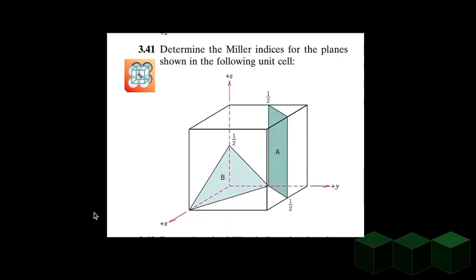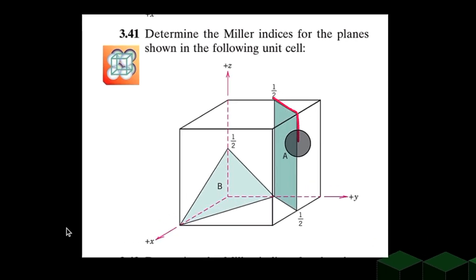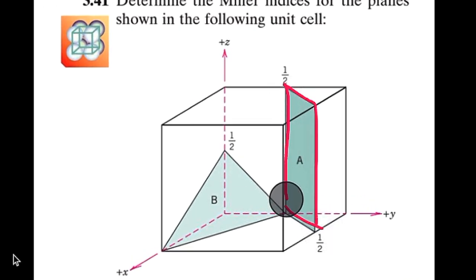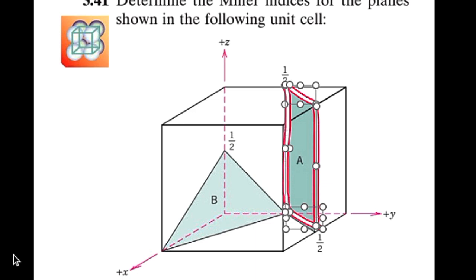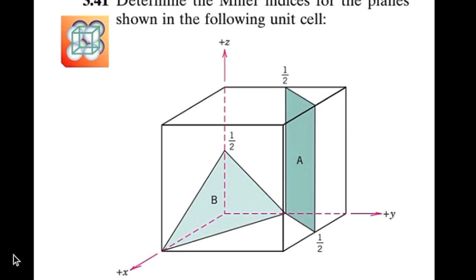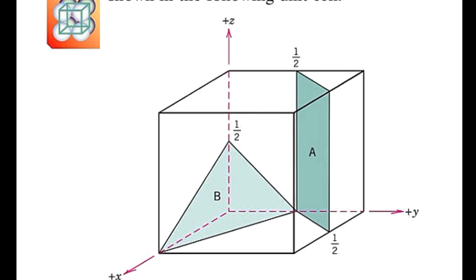We have two different planes here. First we'll find the indices for Plane A, which is in dark green color. It's always good to identify where Plane A is lying. The first step is to define the coordinate system, and while doing so, make sure you choose a point that enables you to calculate all of the intercepts — the x, y, and z intercept, which are the points where the plane cuts each axis.